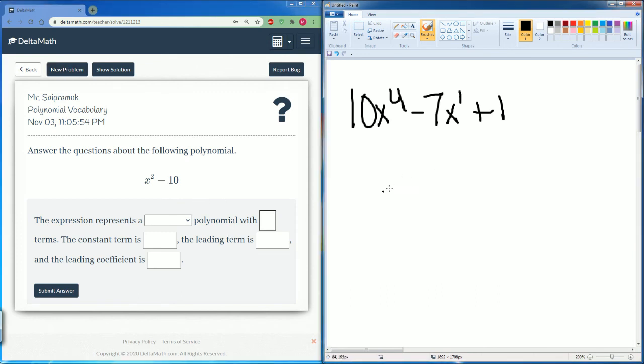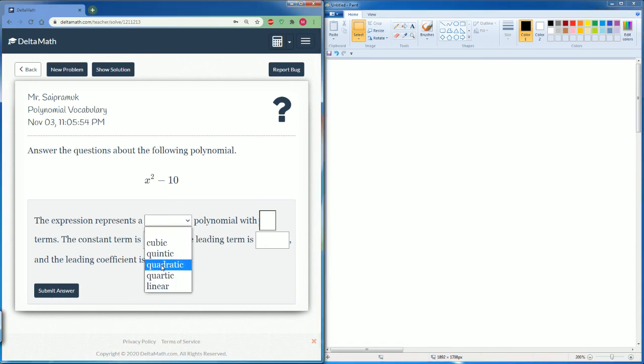Next. This is already in standard form. This is a quadratic, because it's to the power of 2. The polynomial has two terms, x squared and negative 10.